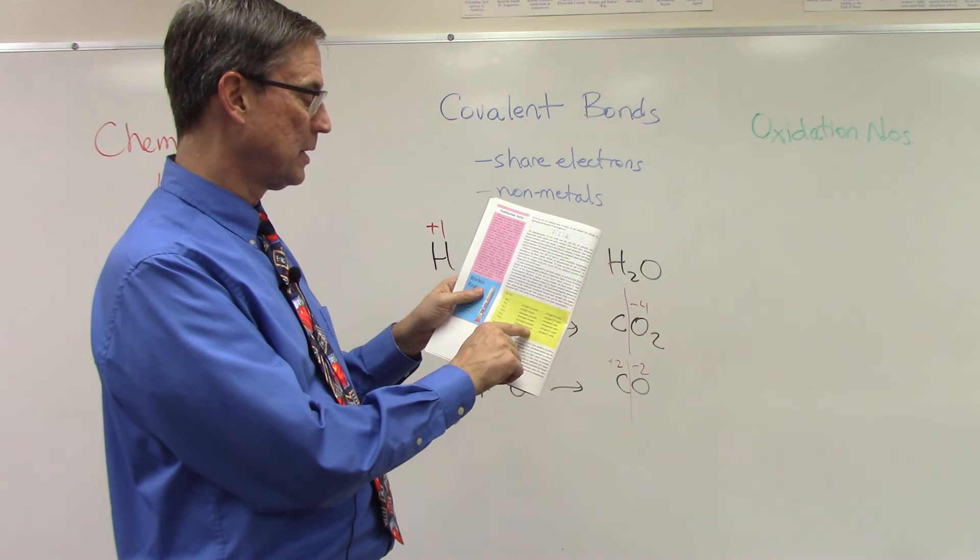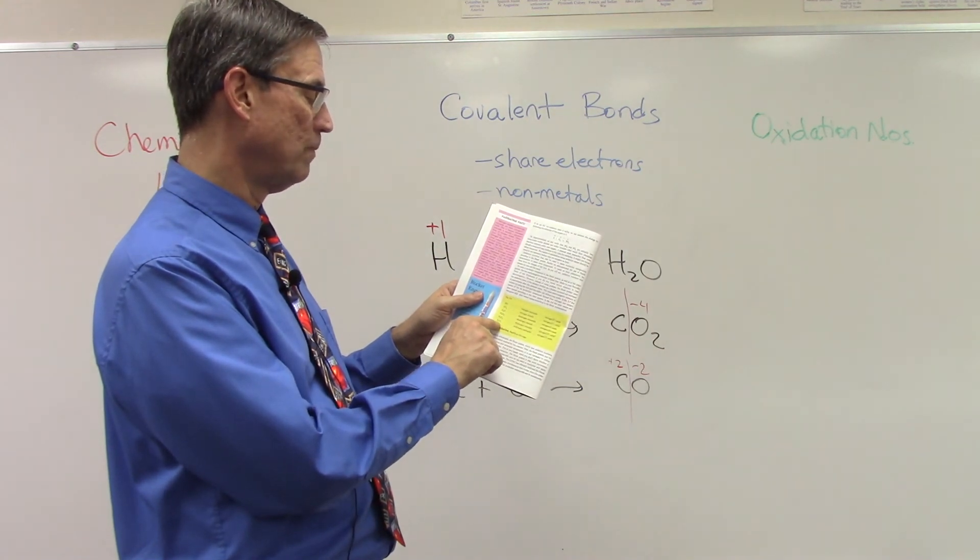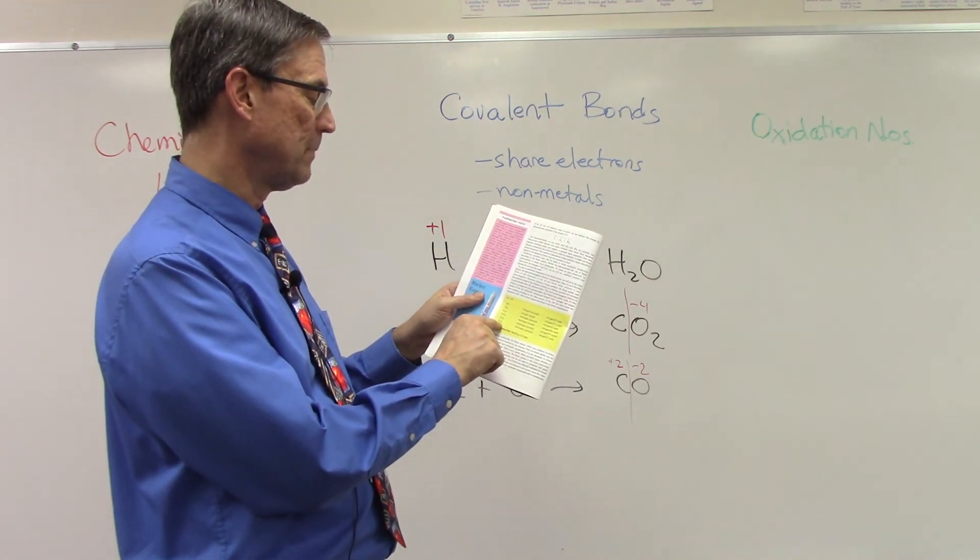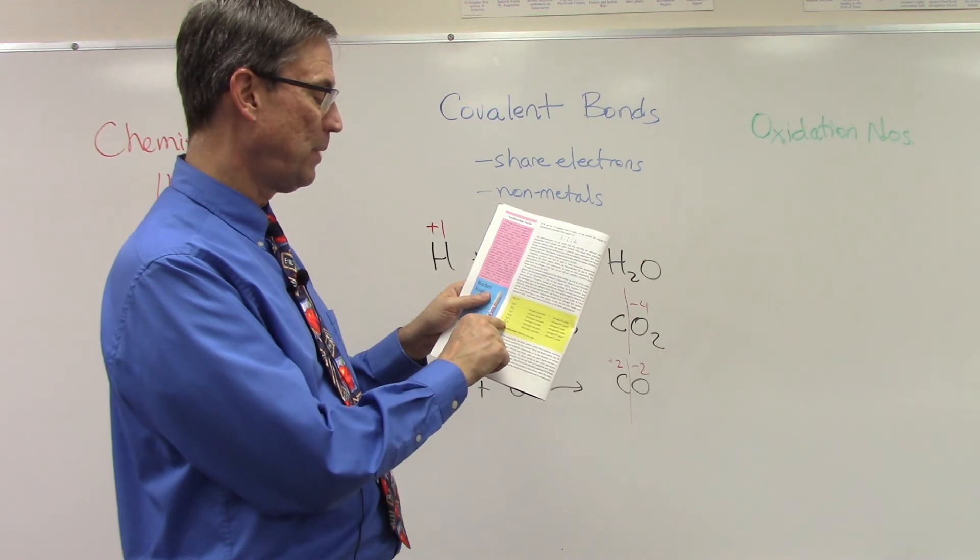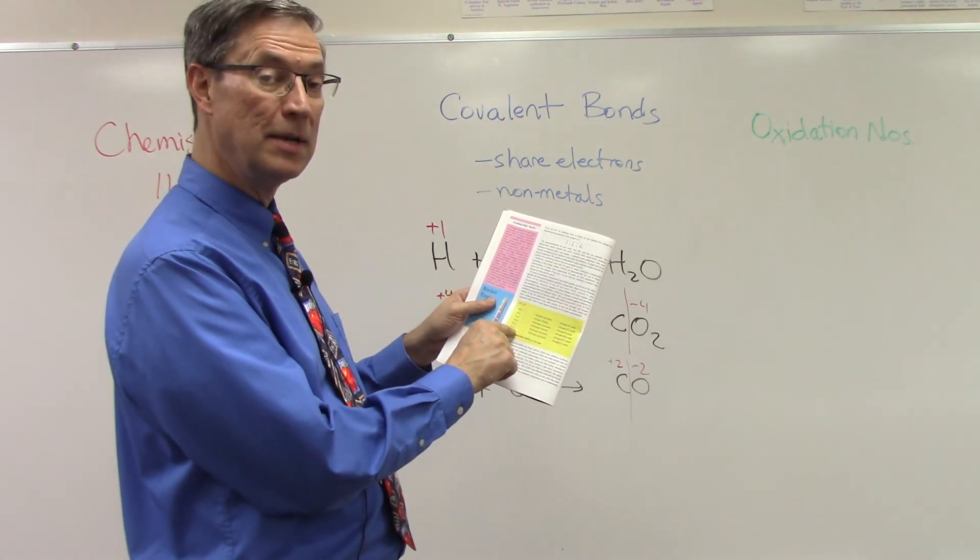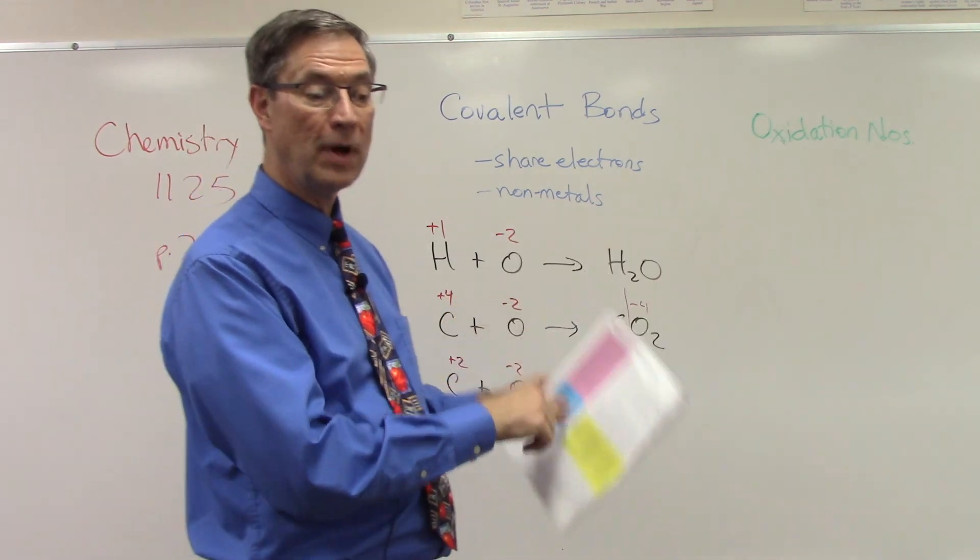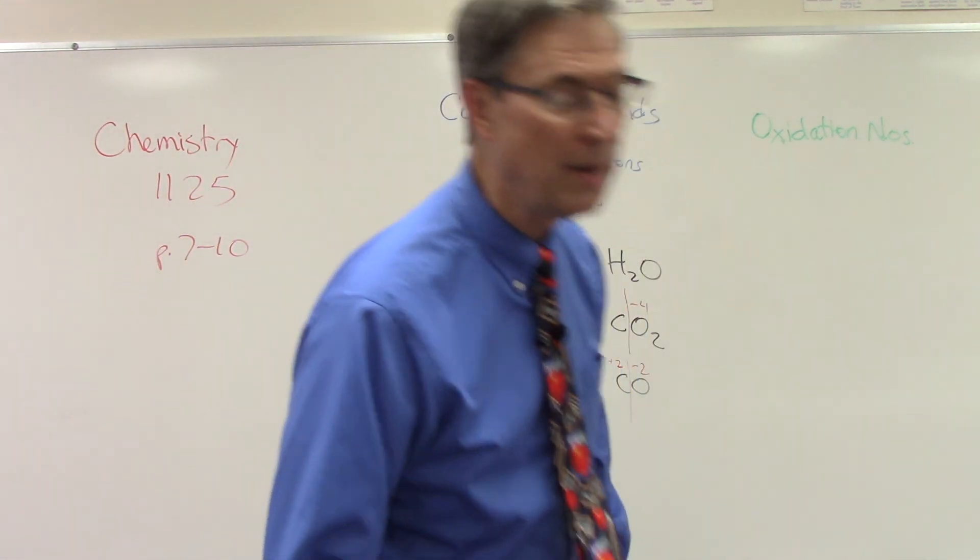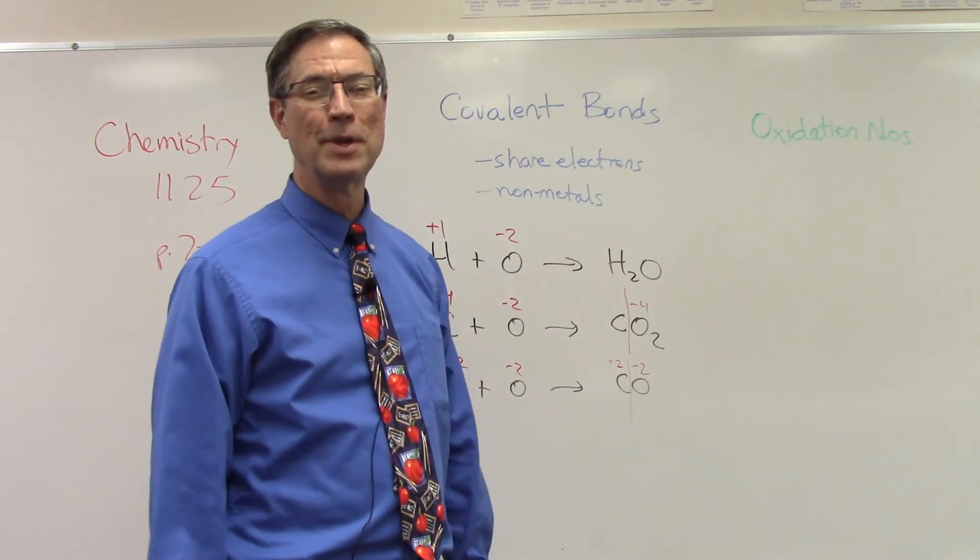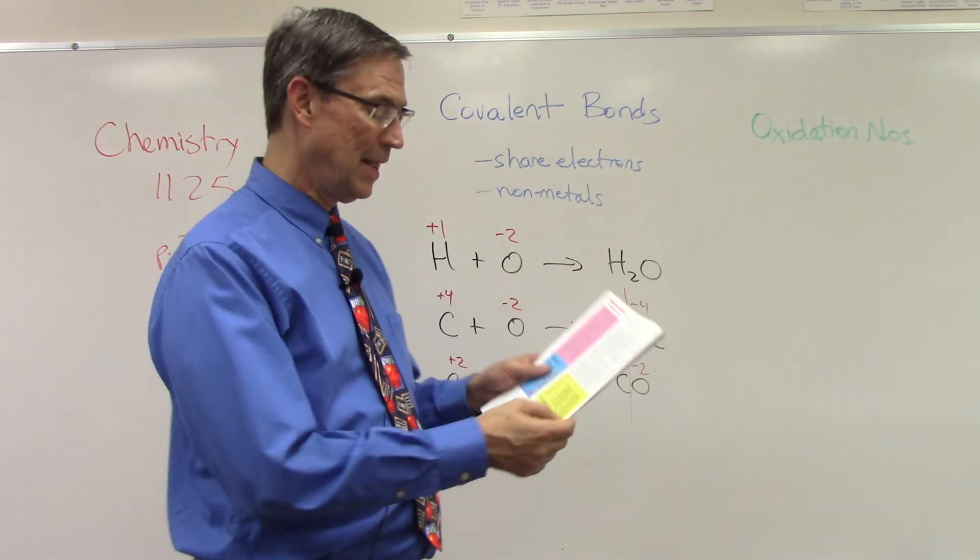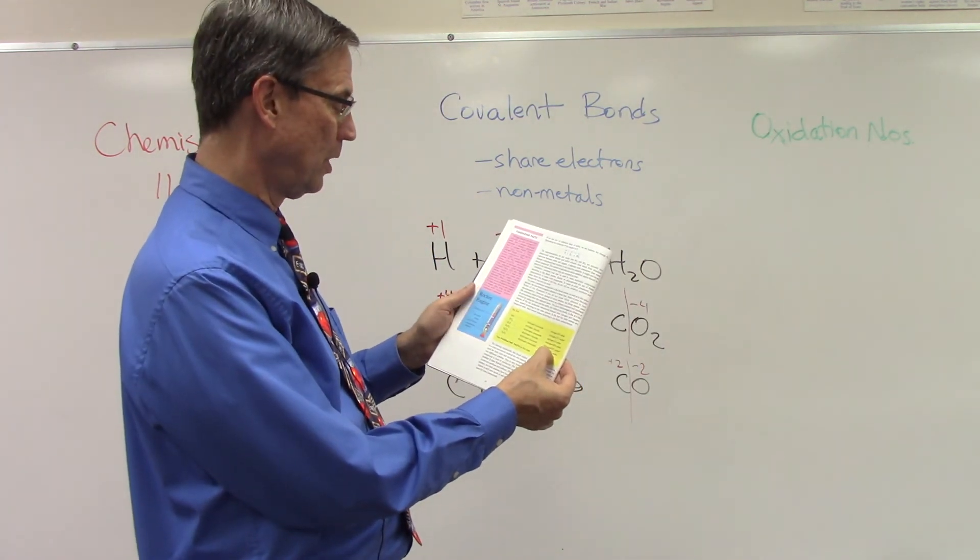Down here at the bottom, dinitrogen pentoxide. So I know that that has to be positive 10 and negative 10 for those. So that means nitrogen must have a charge of positive five. Let's look at the periodic... Oh, yeah. Nitrogen is one of those that has lots of possible numbers. So five is one of them. And so that's where the Roman numeral comes from.